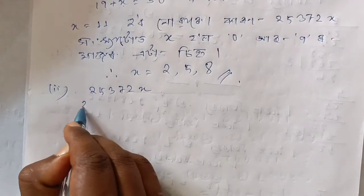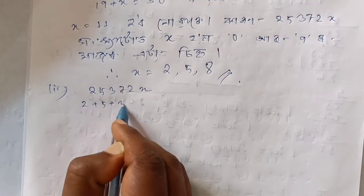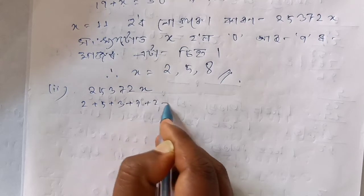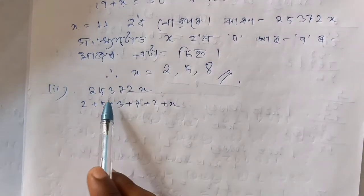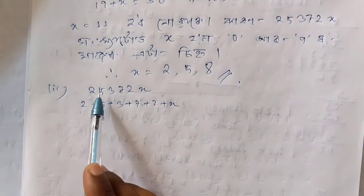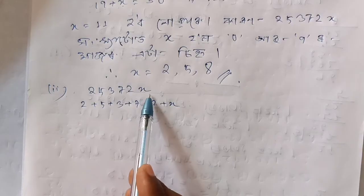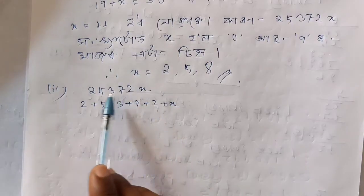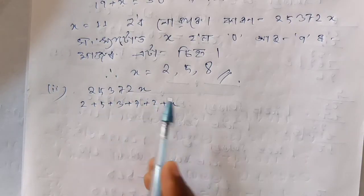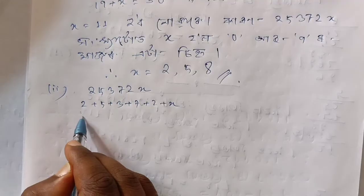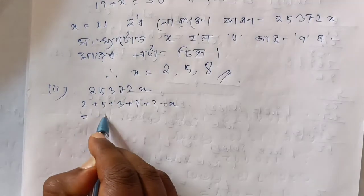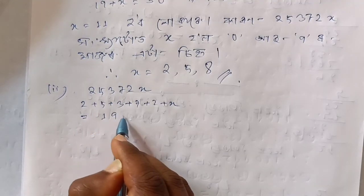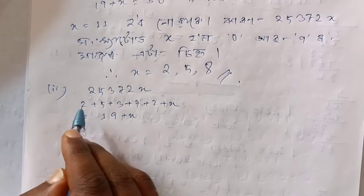H plus 5 plus 3 plus 7 plus 2 plus x. 19 plus x, write 8.